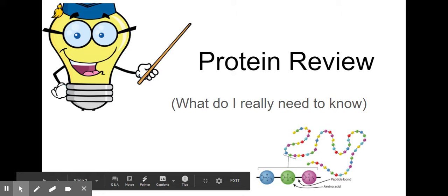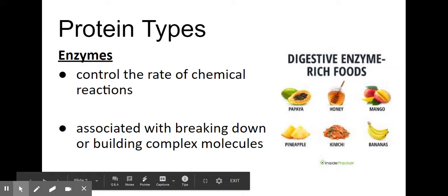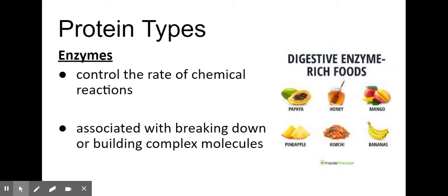We talked about some of the proteins, so let's go over what exactly you need to know with the protein activities that we did. The first thing is that there are different types of proteins we're responsible for. The first one is an enzyme — enzymes control chemical reactions. They are in charge of metabolism, breaking things down, and making sure that we have adequate nutrients and our body is able to use those nutrients.